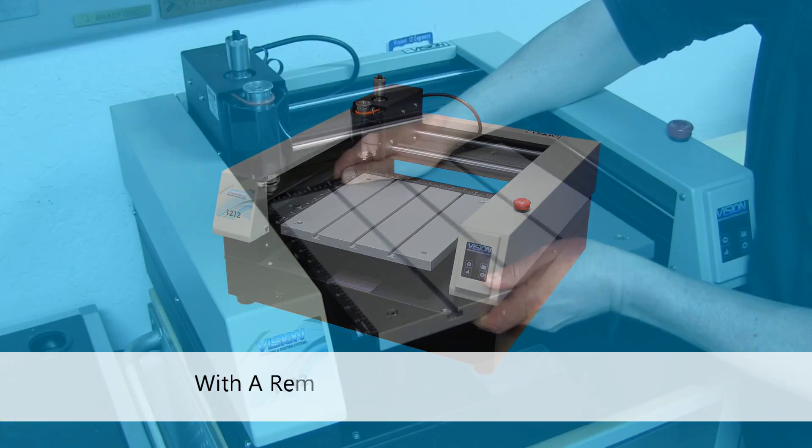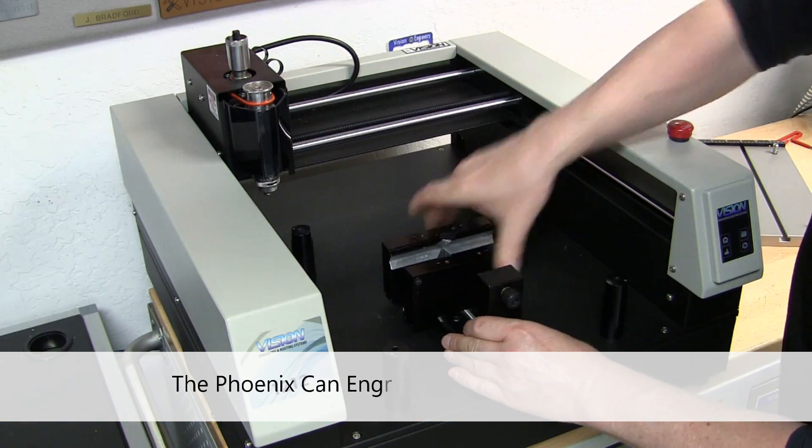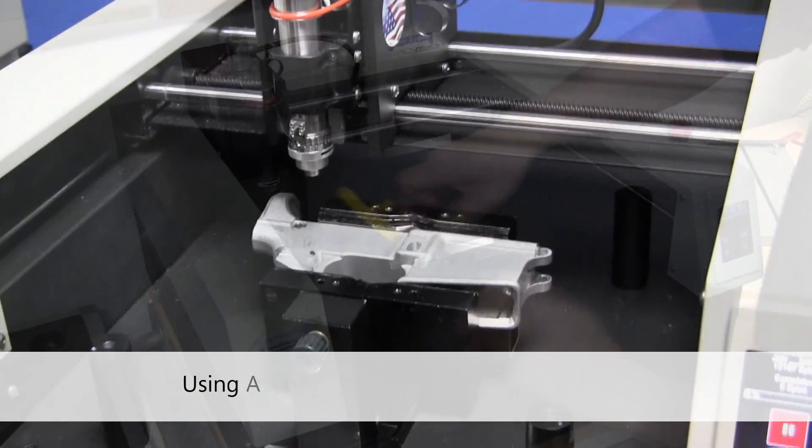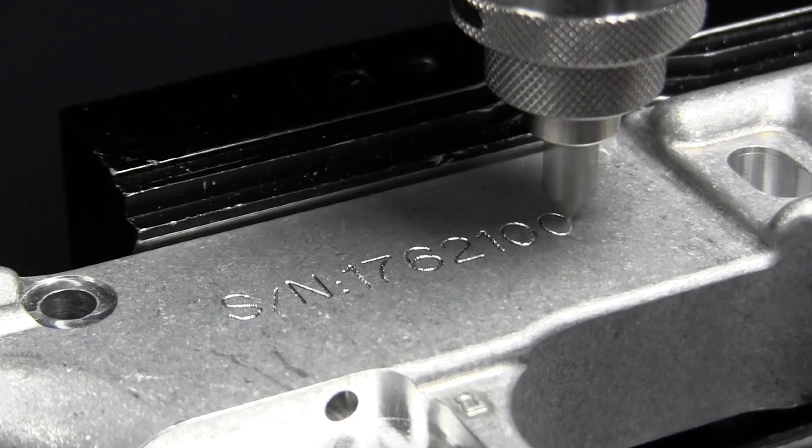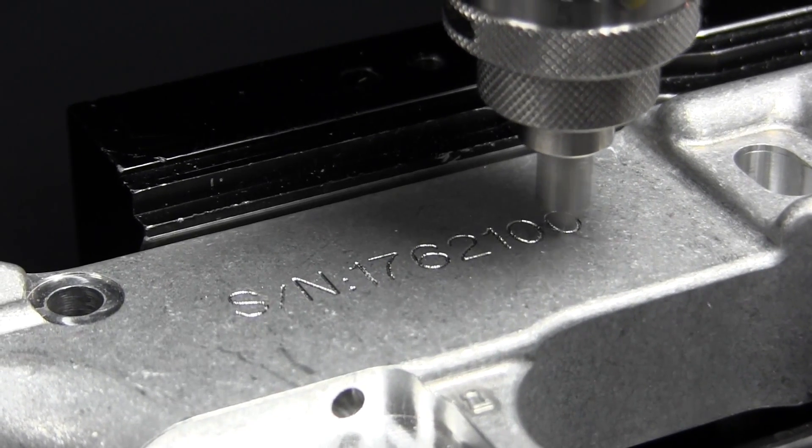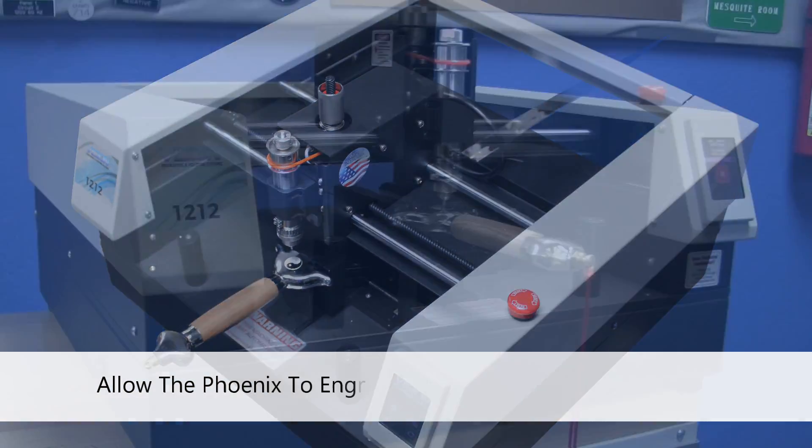With a removable 12 inch by 12 inch T-slot table, the Phoenix can engrave items up to three inches thick. Using an optional self-centering deep vice, its open front and back design allows the Phoenix to engrave items 12 inches wide by any length.